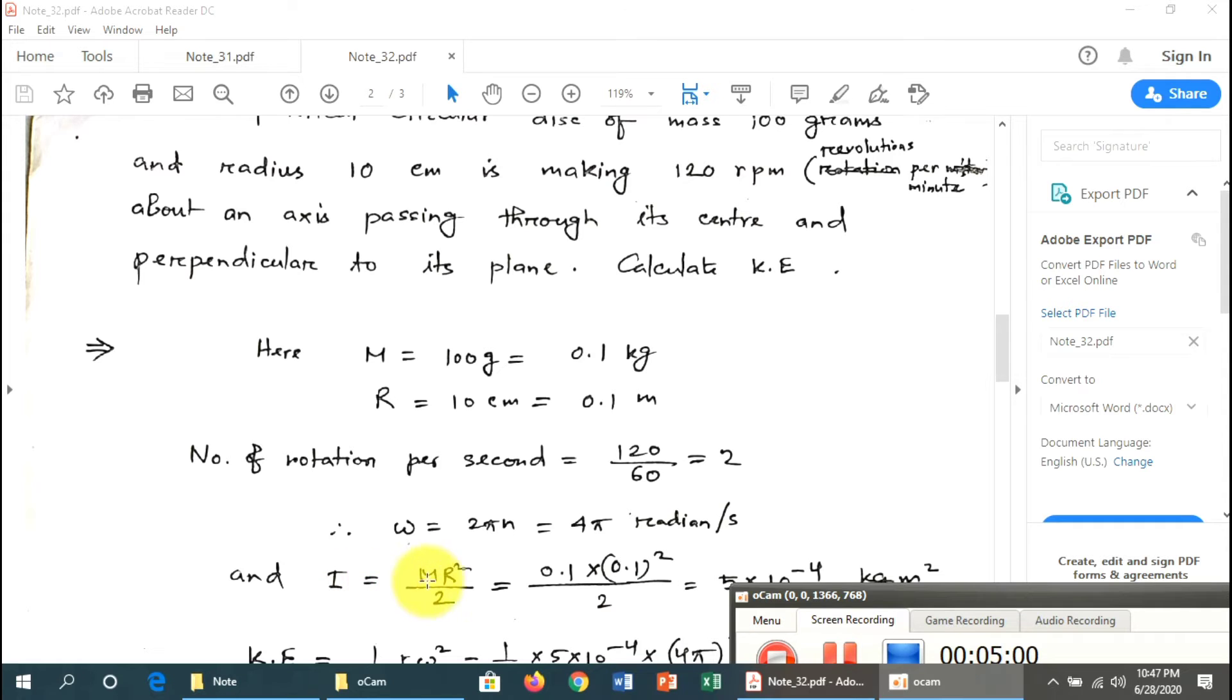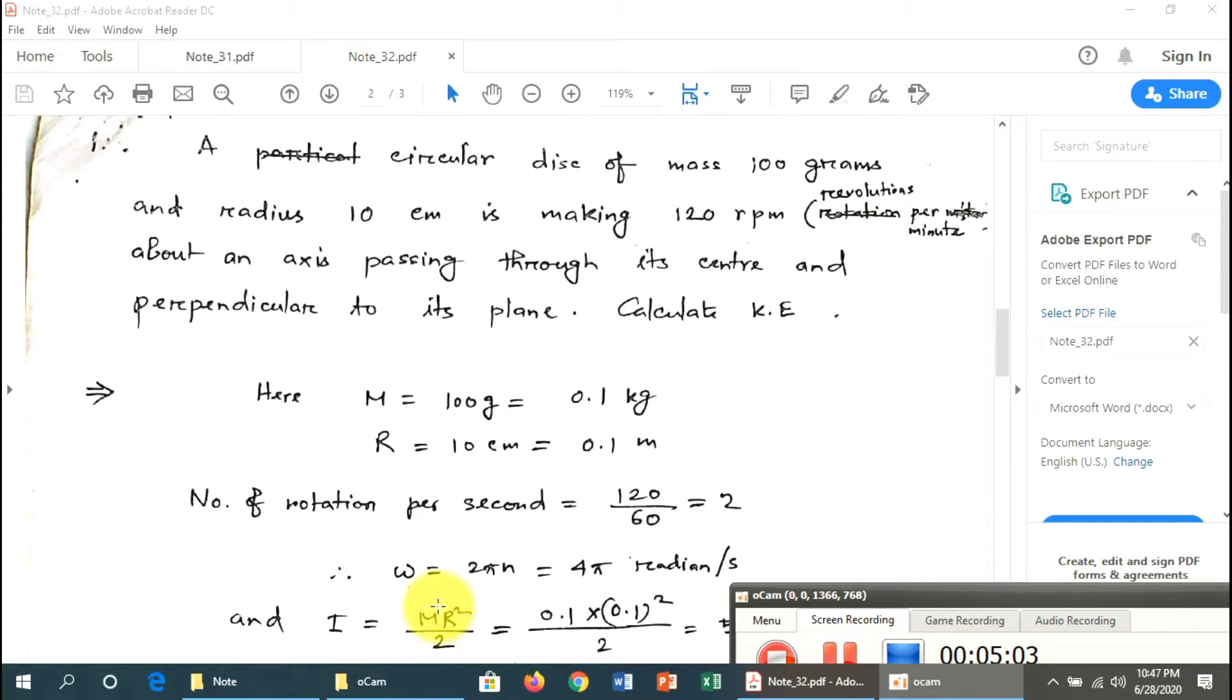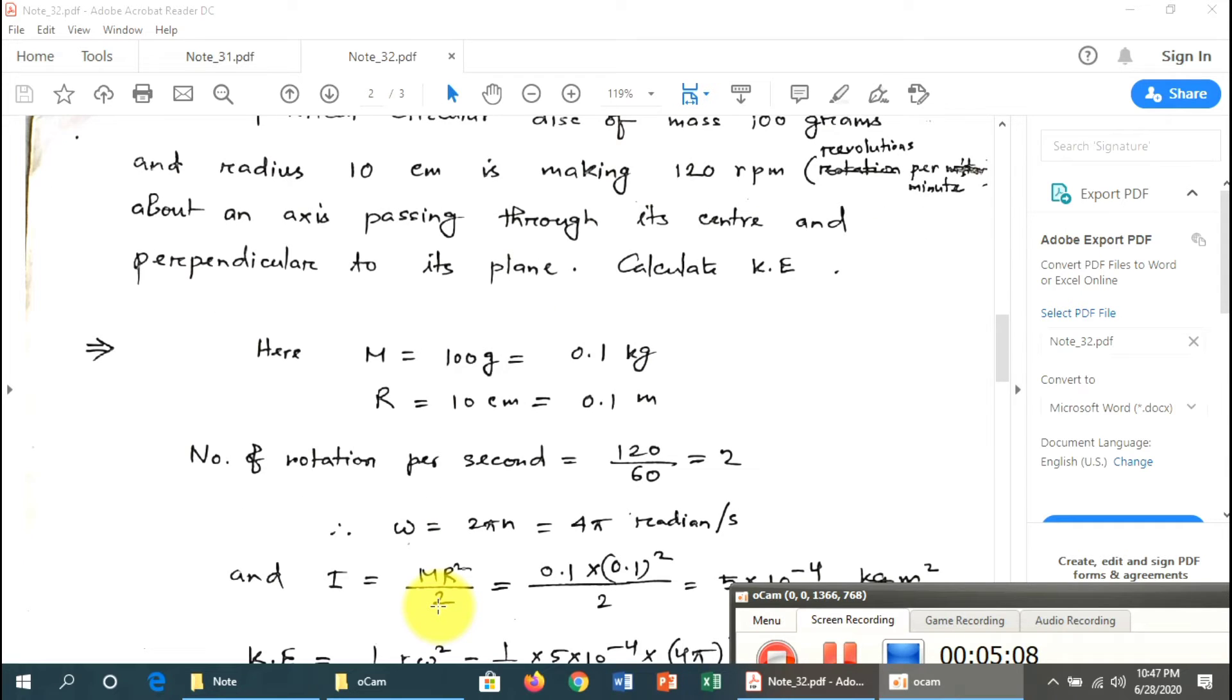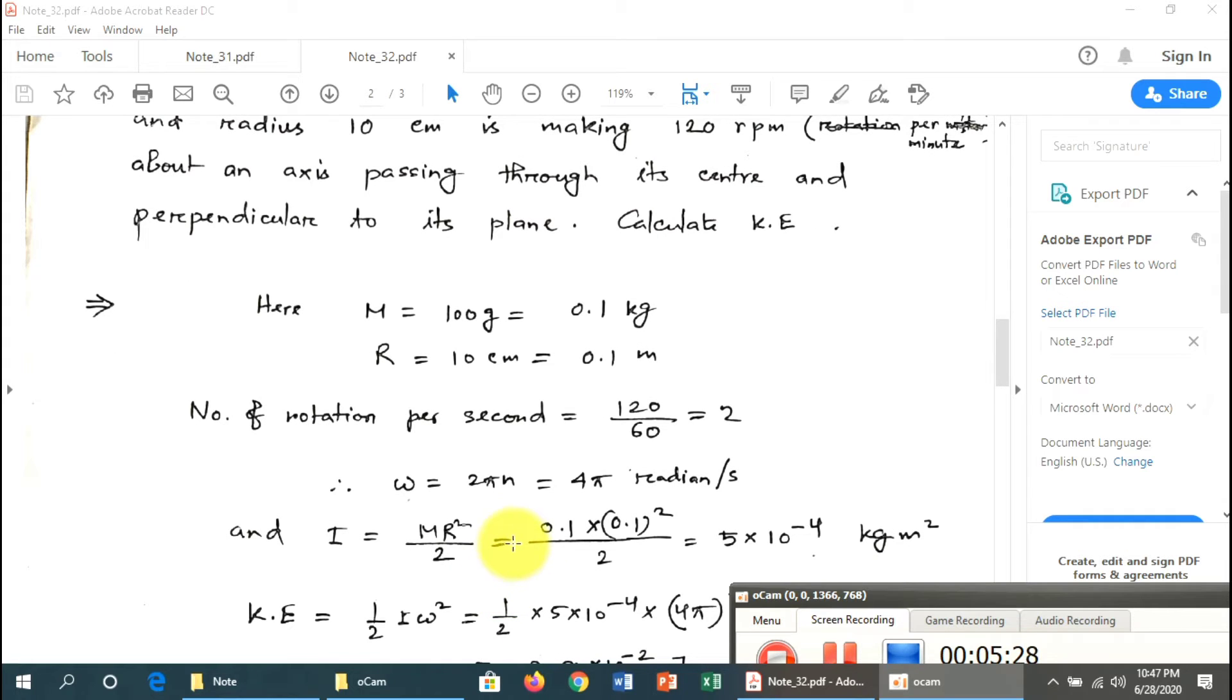The moment of inertia equation for a circular disc is I = mr²/2. For this circular disc, I = 5 × 10^-4 kg·m².